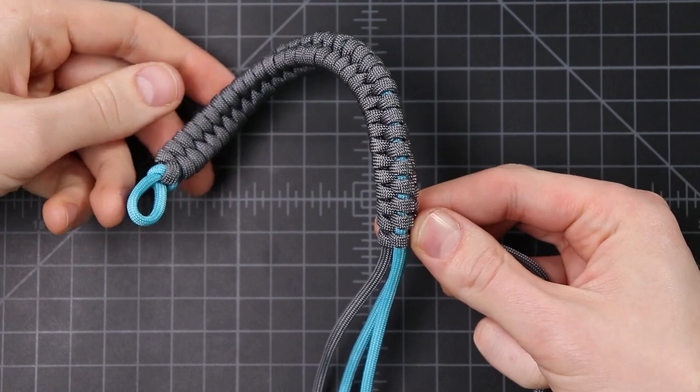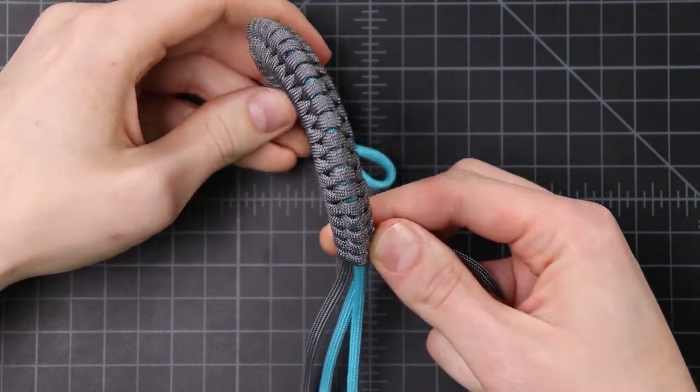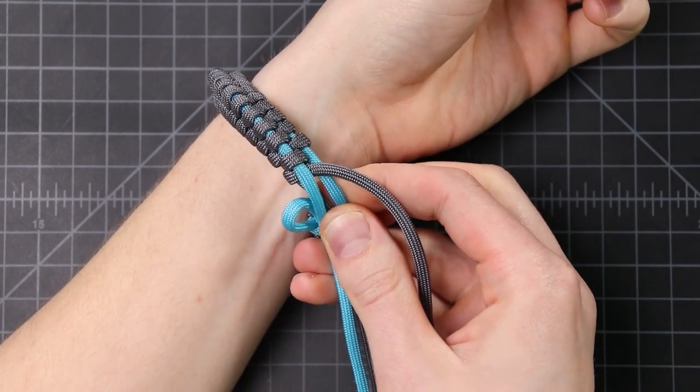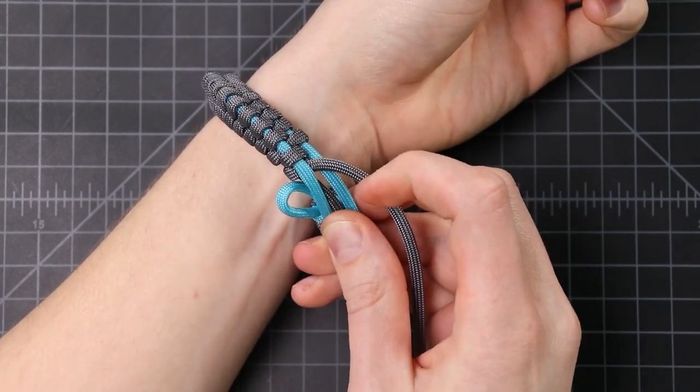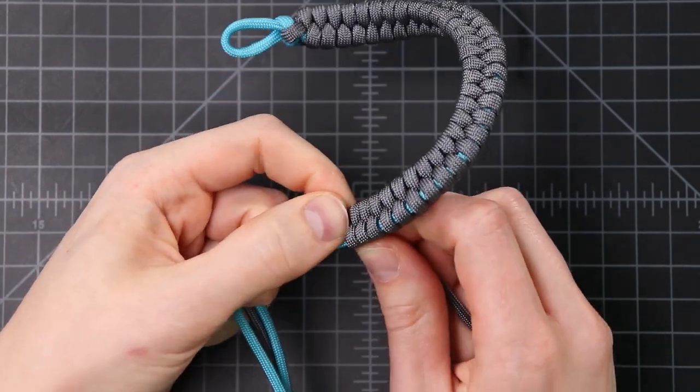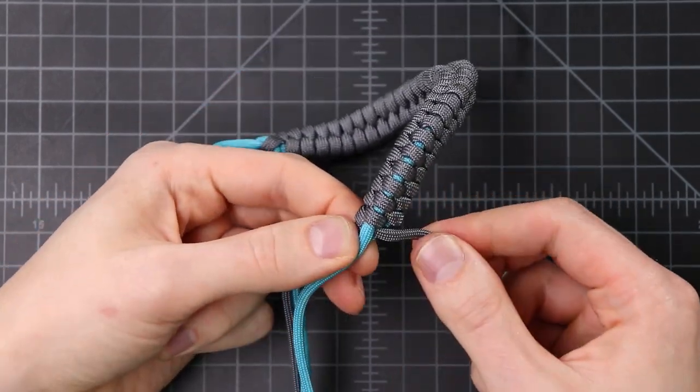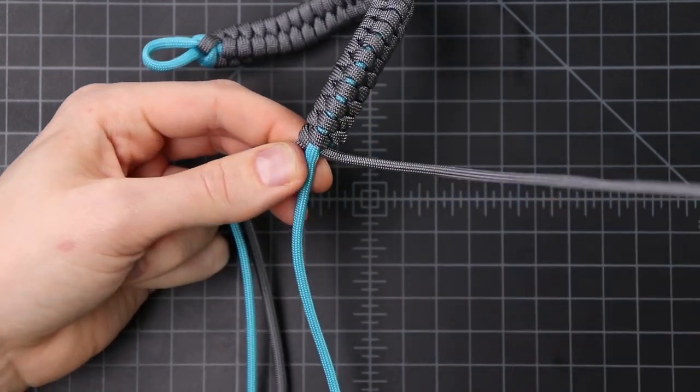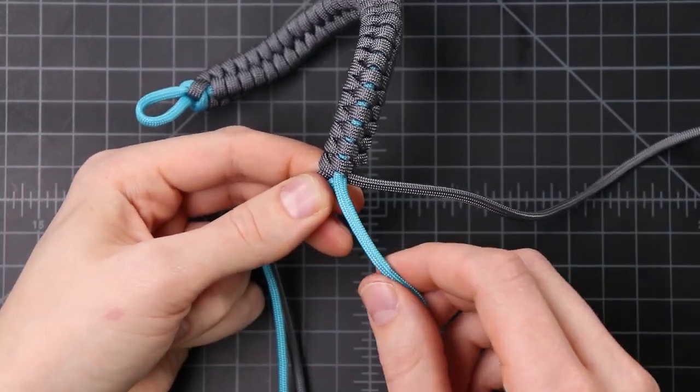All right, so now we've made it to the end of our bracelet. You can size it on and just make sure that it meets up with the end of your loop there. We're going to make the diamond knot in the end, but we need to clip two of our cords first because the diamond knot only needs two strands. So I'm going to end our weaving cord and one other.